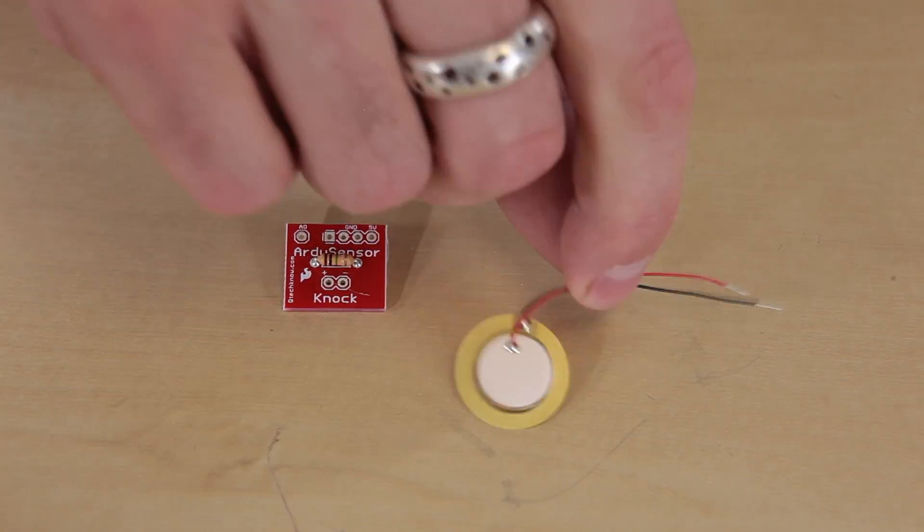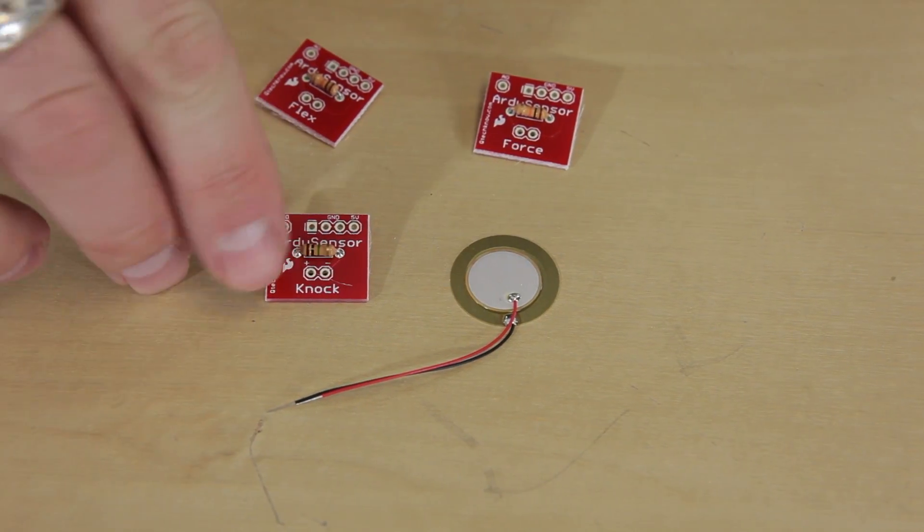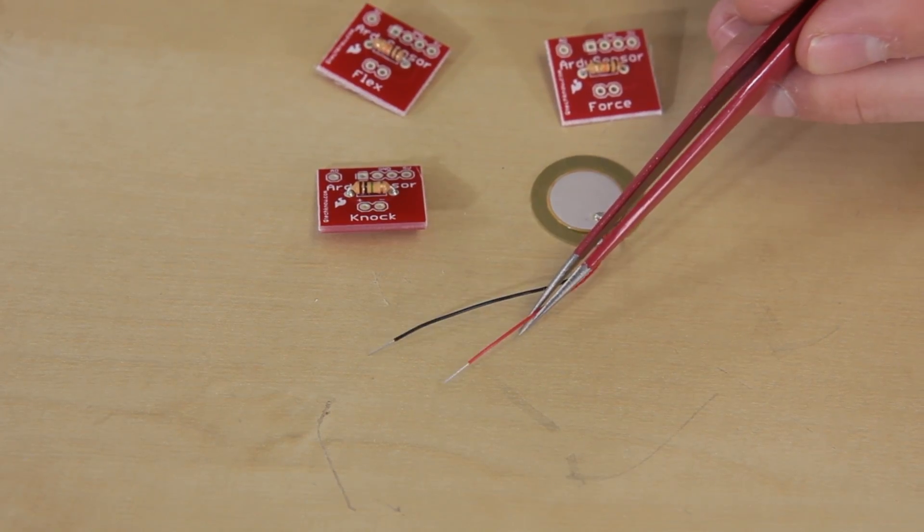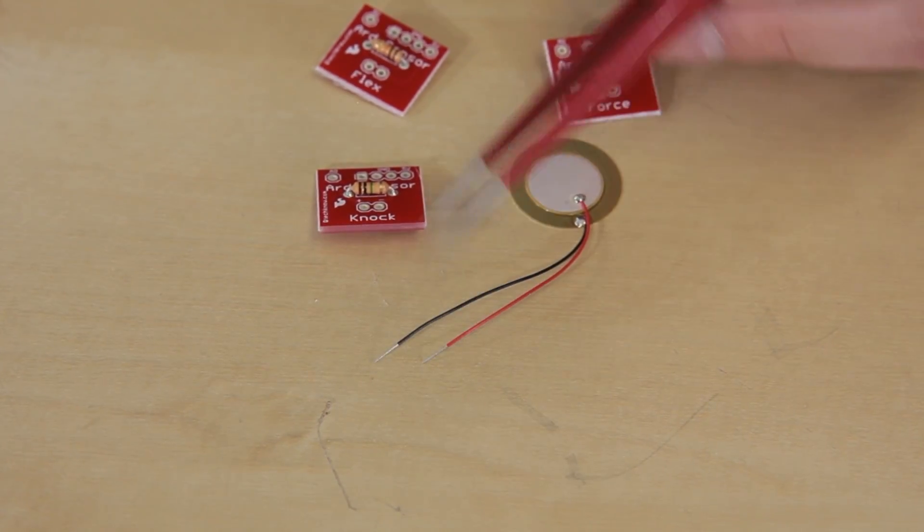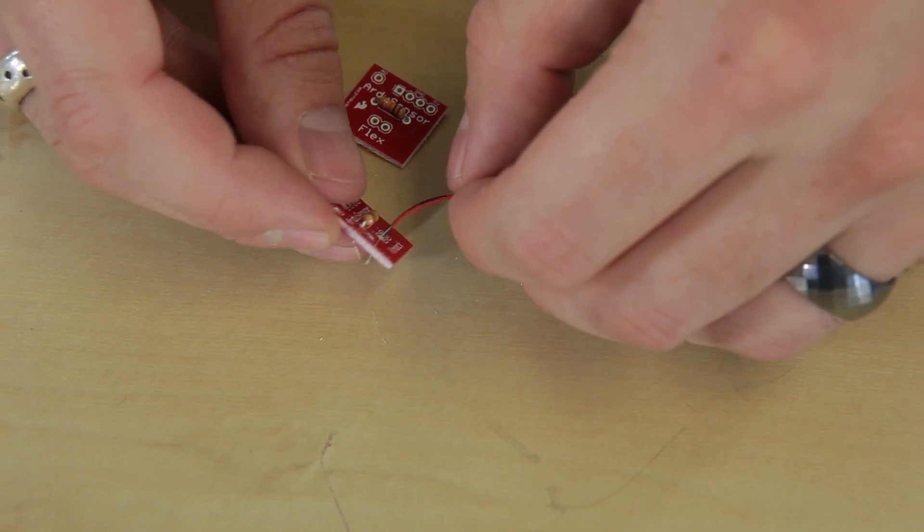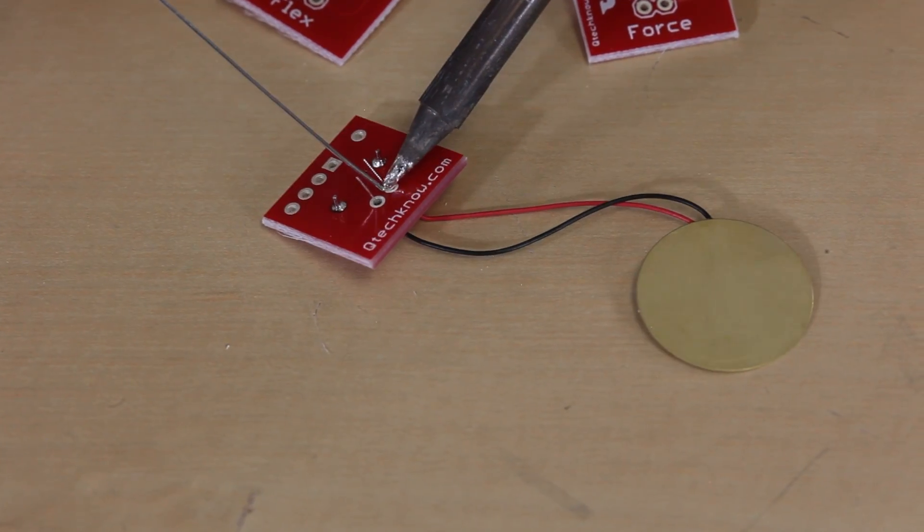Next up we're going to be soldering the knock sensor. Locate the board that says knock and the piezo element. We're going to solder the red wire to the positive side and the black wire to the negative. Just push the wires through, flip it over, and solder them from the backside.